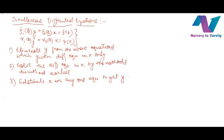Now we will give a question to make this clearer. The question is: dx/dt minus 7x plus y equals 0 — this is the first equation. And the second equation is: dy/dt minus 2x minus 5y equals 0.